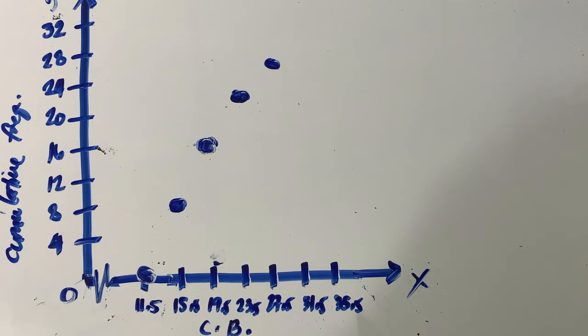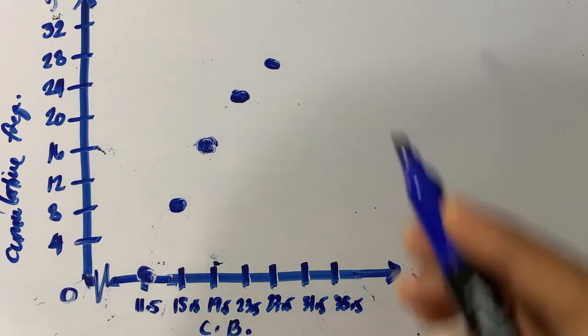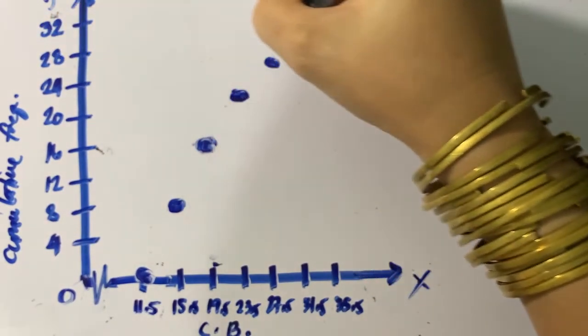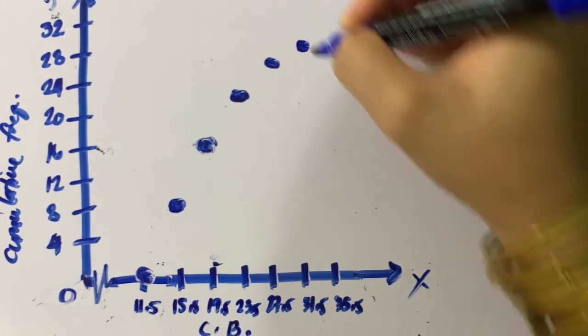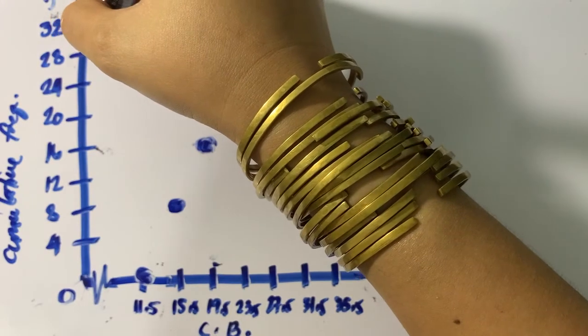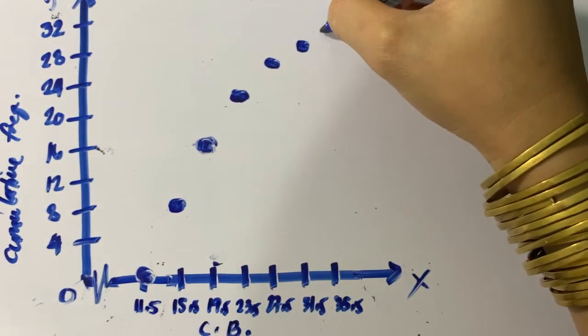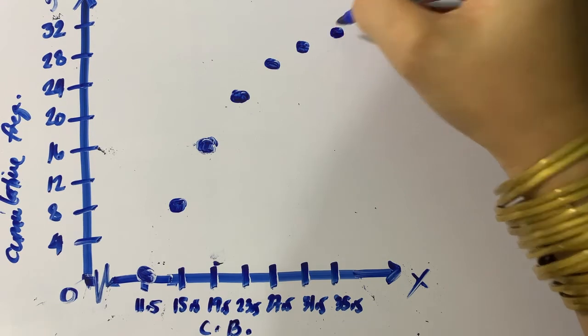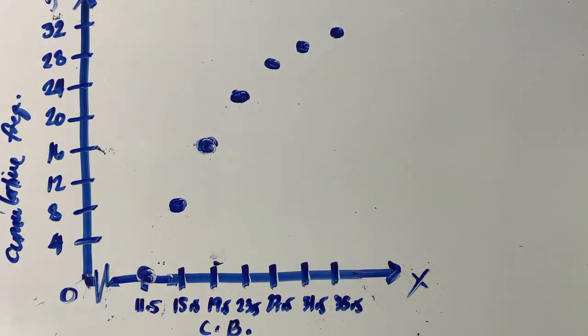At 31.5, the cumulative frequency is 29, which is somewhere here. And at 35.5, the cumulative frequency is 30. That is halfway between 28 and 32. 30 also corresponds to the total number of data values that we have in our distribution.